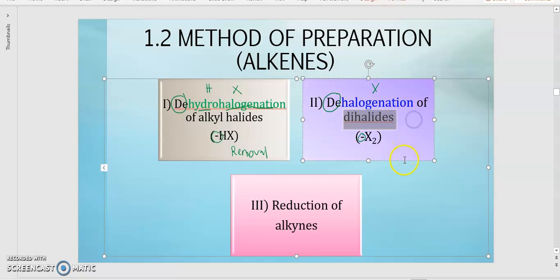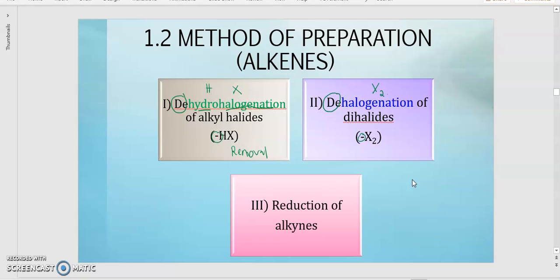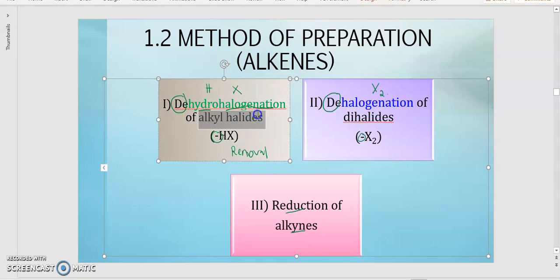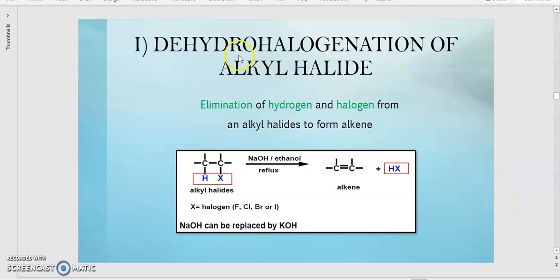So for the dihalide, it is X2 that we are going to remove. And then the third one is the reduction of alkyne — meaning we start from an alkyne and then a reduction reaction occurs. For this video we are going to focus on the first method only, which is dehydrohalogenation.